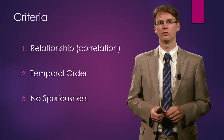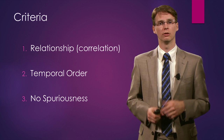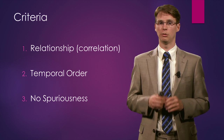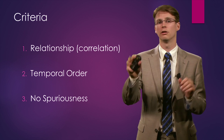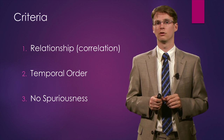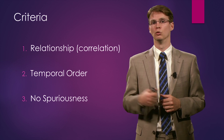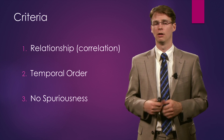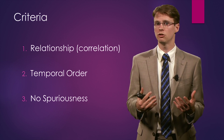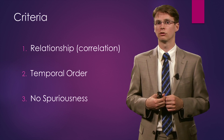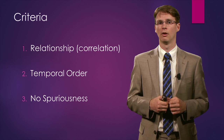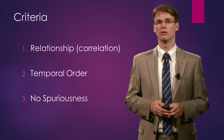So here we see the three criteria. First, there needs to be a relationship between two variables. Second, there needs to be a clear temporal order — a clear cause and a clear effect. Third, the relationship cannot be spurious: it cannot be based on coincidence, and we must rule out rival explanations. If any of these criteria cannot be met, we cannot conclude that there is a causal relationship. Thank you for watching this lecture.